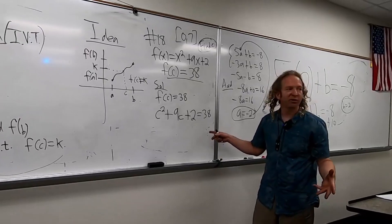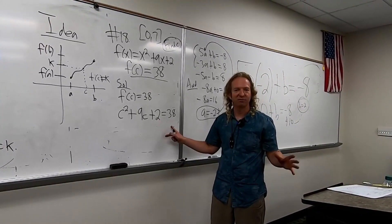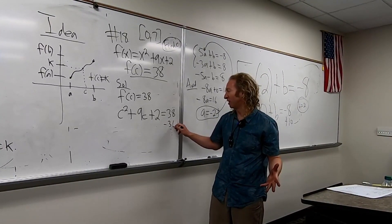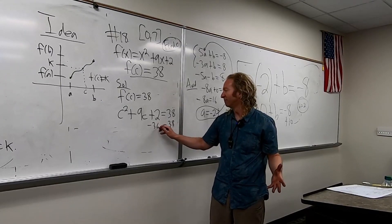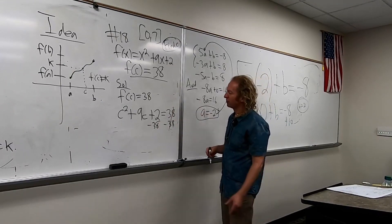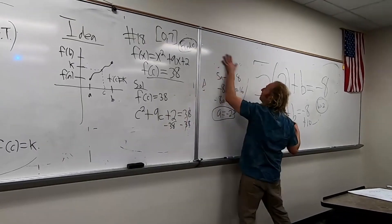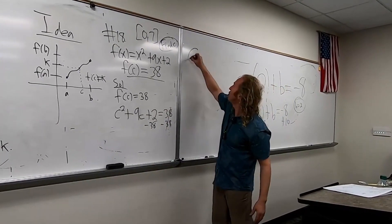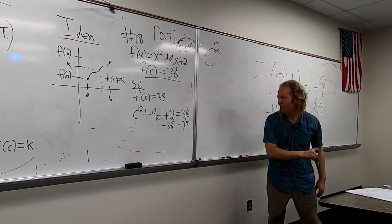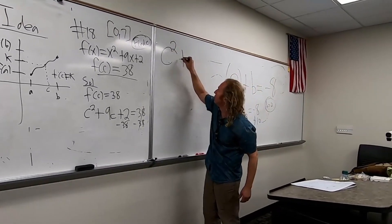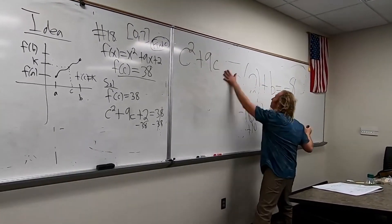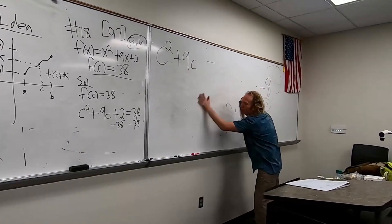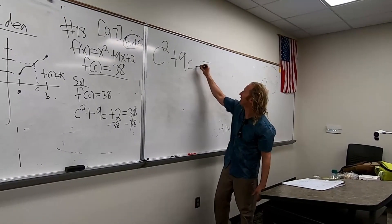So maybe we can subtract the 38 from both sides. I haven't done this in a long time. So I'm still coming back from my zone out. So this is going to be c squared plus 9c minus 36 equals 0.